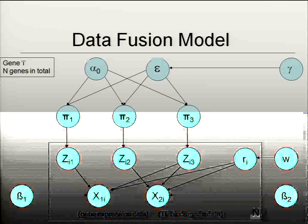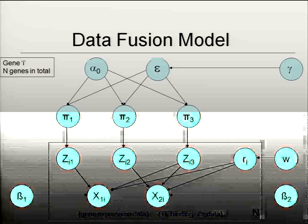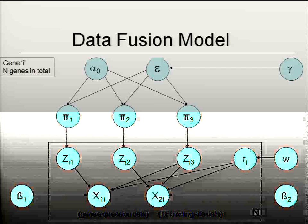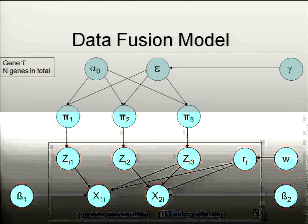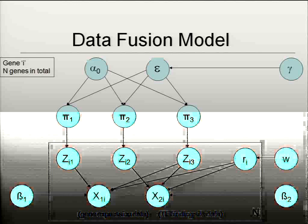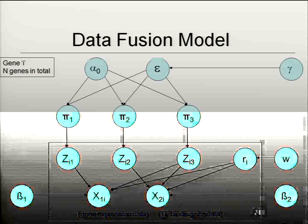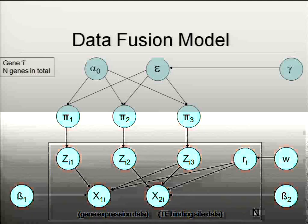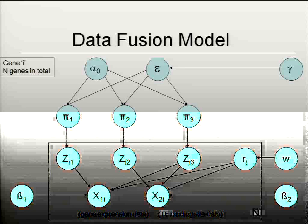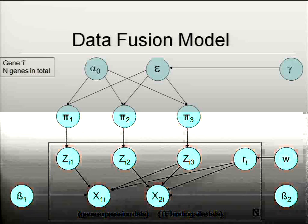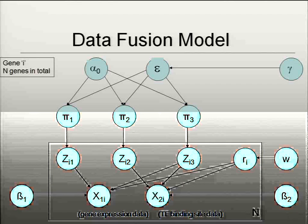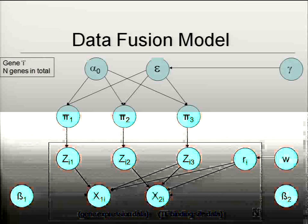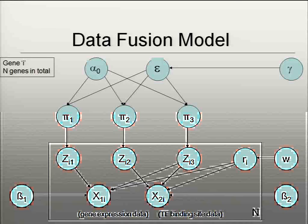If you set W to a half — which is what we do for the full version of the model — then we're allowed to learn what these R sub i values are. What we're hoping is that some genes will end up with R sub i being one most of the time — those genes will likely be fused. Some genes will have a lot of zeros, and those we're probably less interested in.